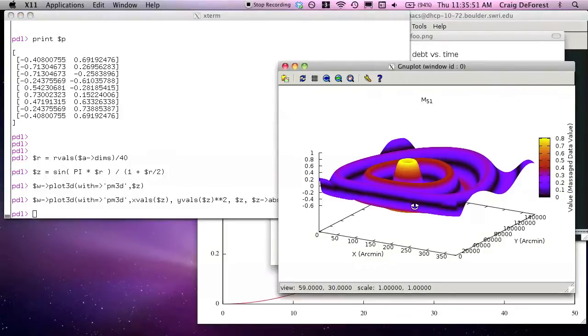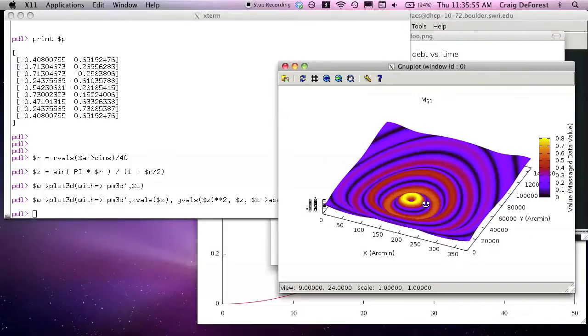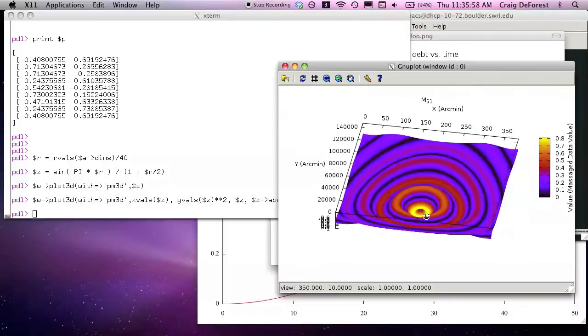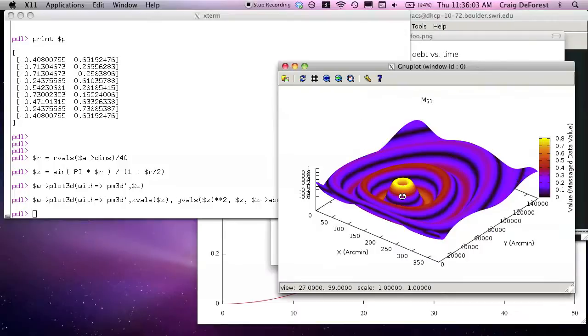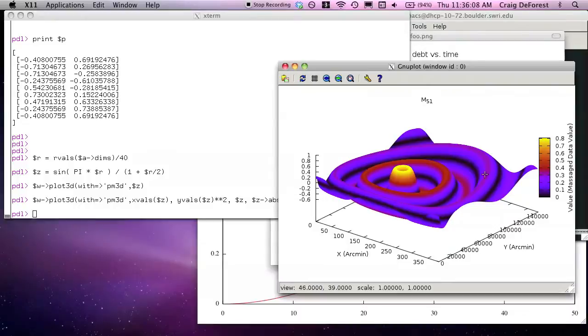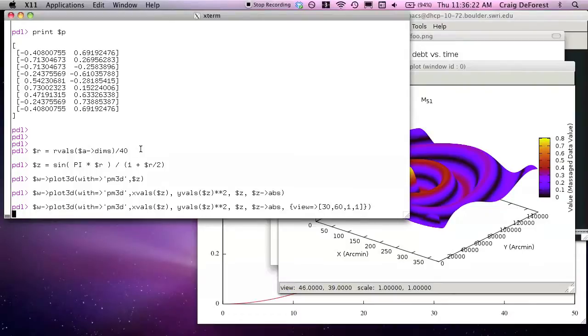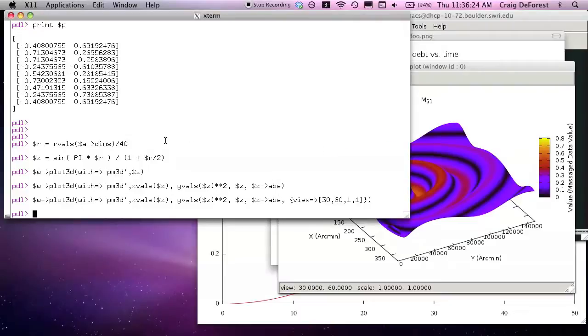You can change the perspective by dragging around here. Take a look at the numbers down below. You can see them changing. Those three, four numbers that you see are the angles around the Z and X axes. And the scale of the X, the Y and Z axes relative to X. So we can reproduce a particular view. Let's do that. And that'll give us that particular view.